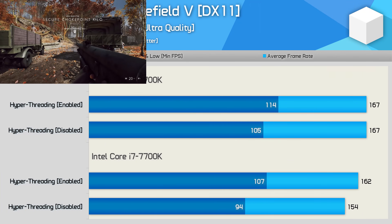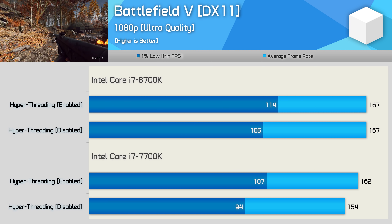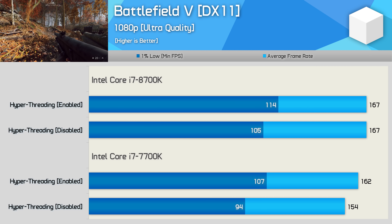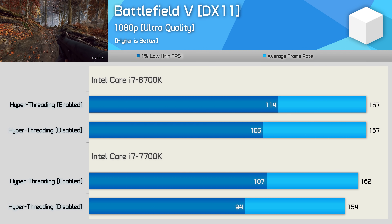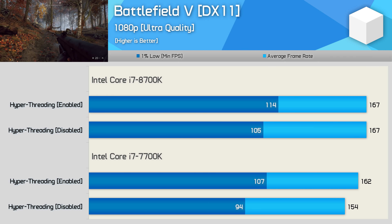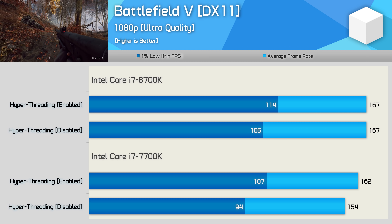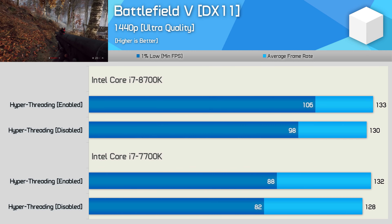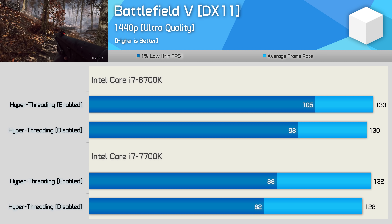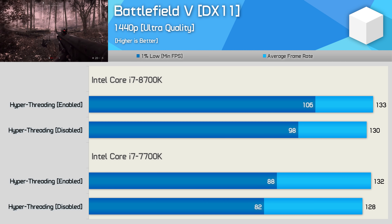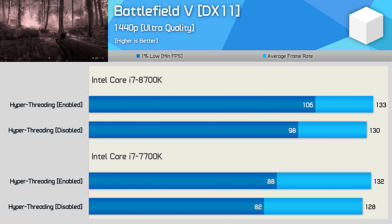Battlefield V is a very CPU-intensive title, though we only had time to test the single-player portion of the game. We don't really see much of a performance decline here — the biggest drop-off was up to 12%, looking at the 1% low margin for the 7700K. Increasing the resolution to 1440p didn't really help with 1% low performance for the 7700K. Disabling hyperthreading does reduce performance, but it's not major. Still, I doubt any gamers will welcome a 5% to 12% reduction.